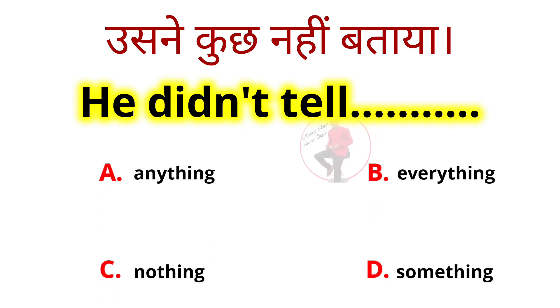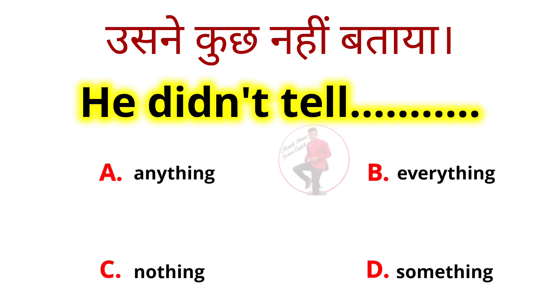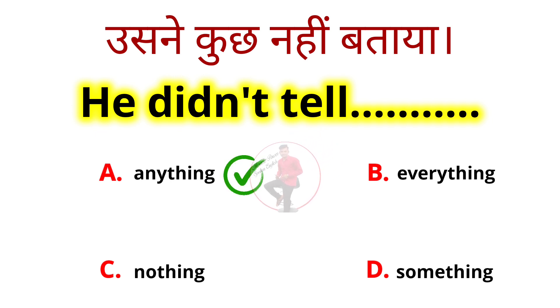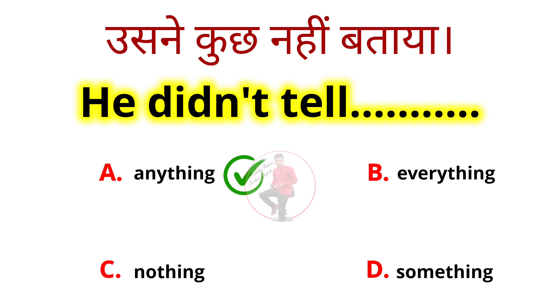Usne kuch nahi bataya — He didn't tell blank anything. The options are: everything, nothing, anything, something. The correct answer is 'anything' — He didn't tell anything.